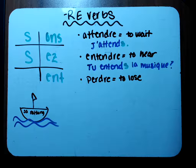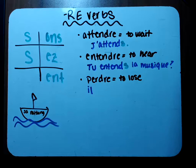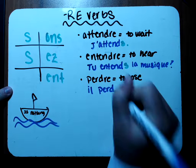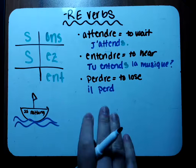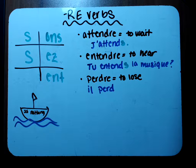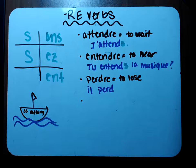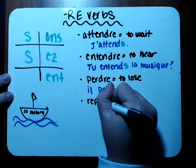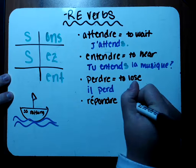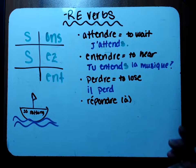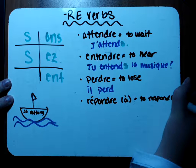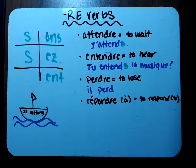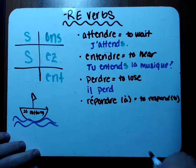Fourth example — the verb 'répondre,' which means to respond. If followed by à, it means to respond to something — like to respond to madame or to respond to the question. Let's use nous: 'we respond.' Write your stem, add the new ending ONS. Nous répondons — then finish the sentence: à madame. Because we all respond to madame, right? Mme is short for madame.